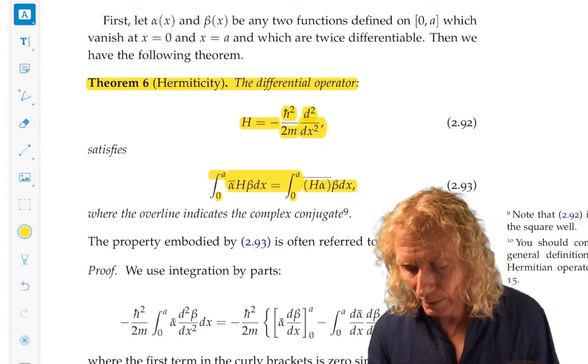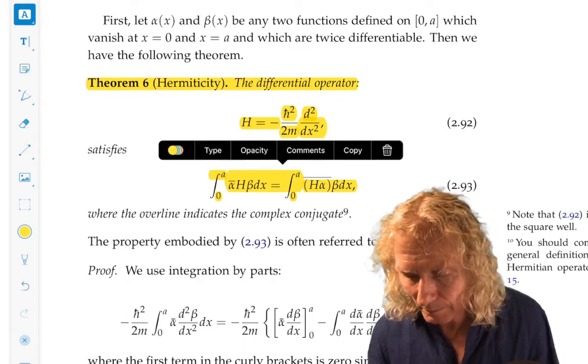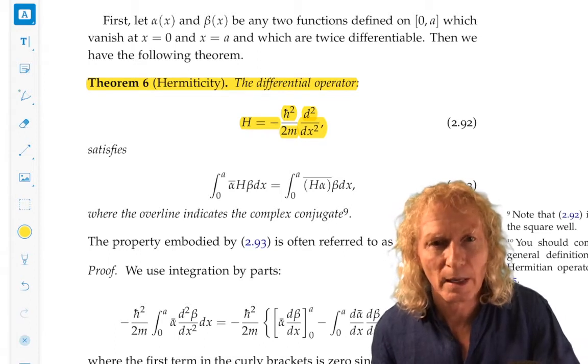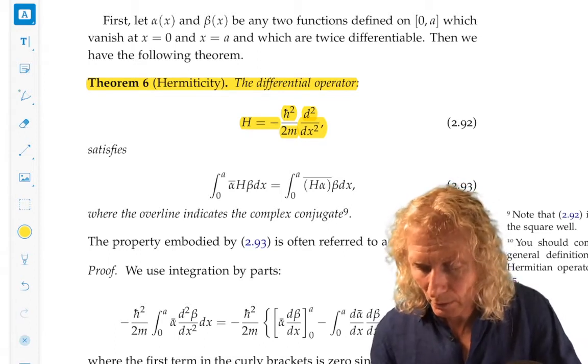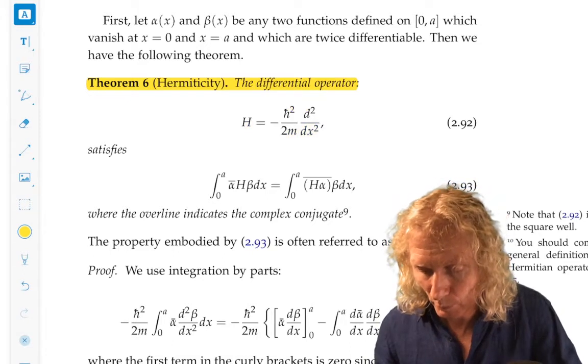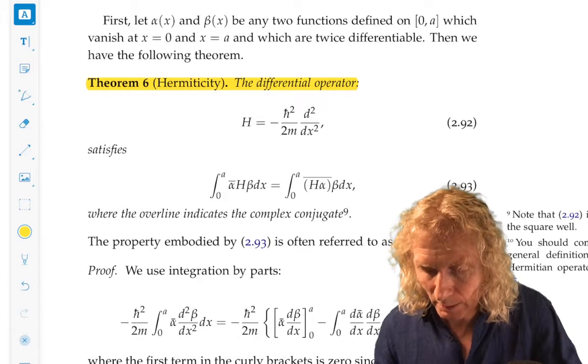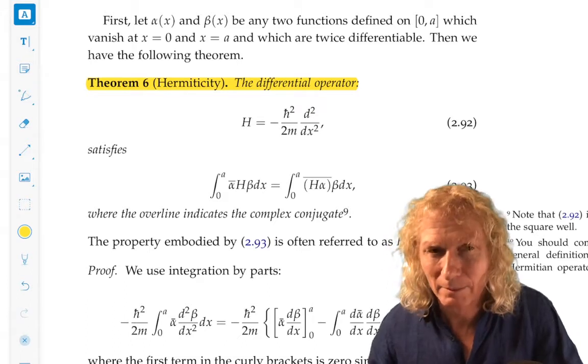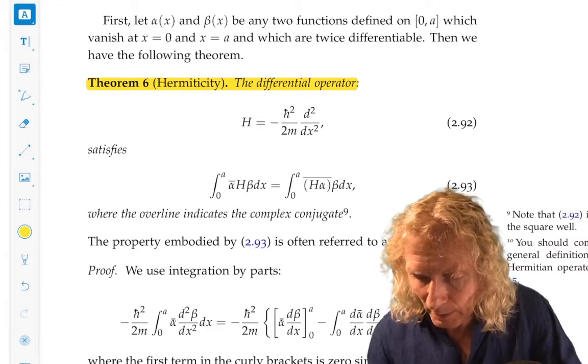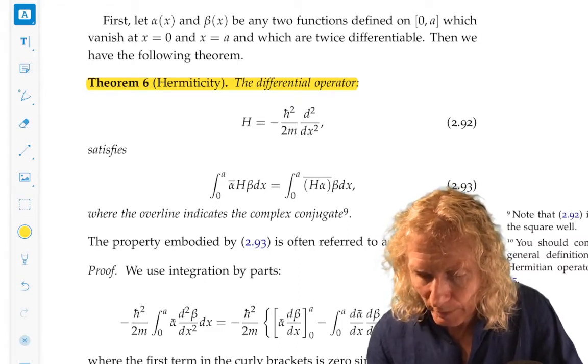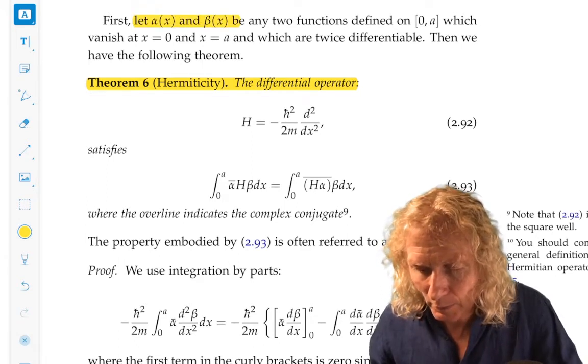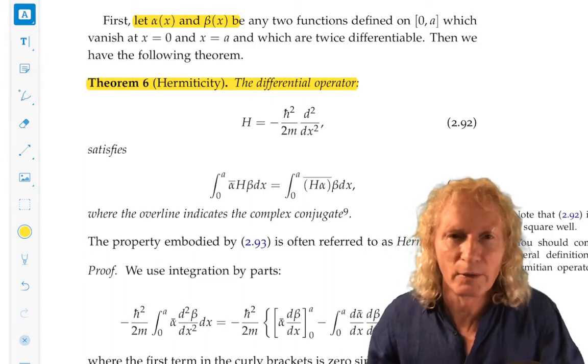Now if you stare at this enough, this is a statement that this particular Hamiltonian is self-adjoint because we move the Hamiltonian from the right to the left. I forgot to say something very important. We're proving this for two arbitrary functions, alpha of x and beta of x, defined on zero to A, which vanish at the endpoints and are twice differentiable. We need to differentiate them.